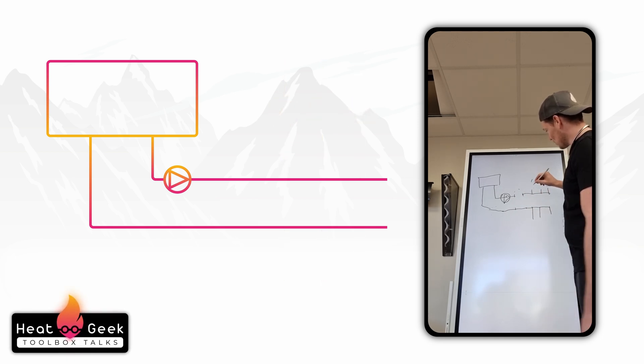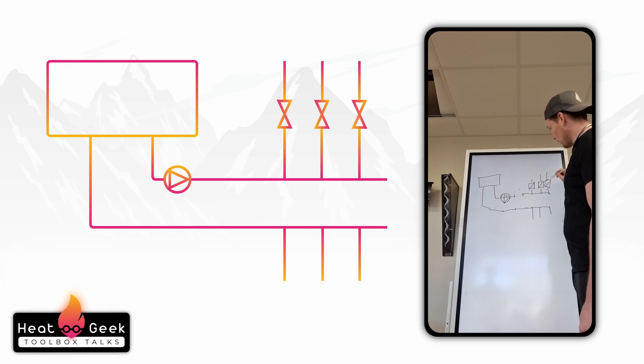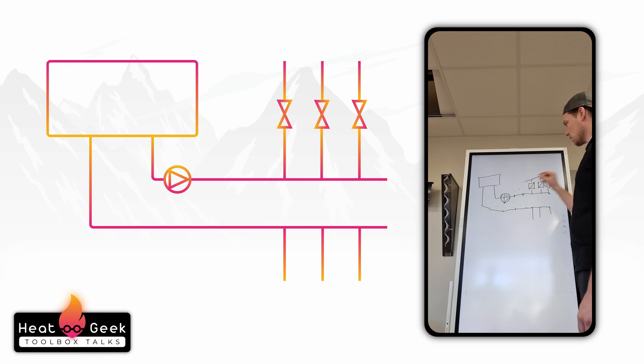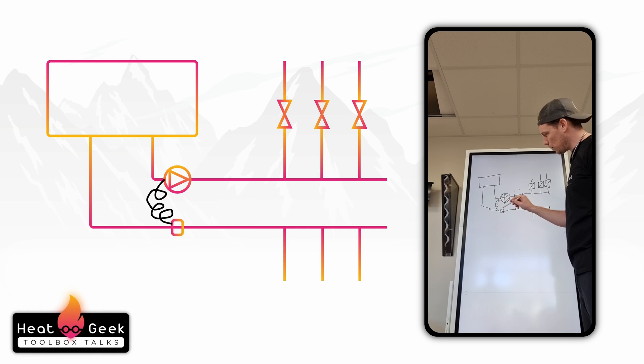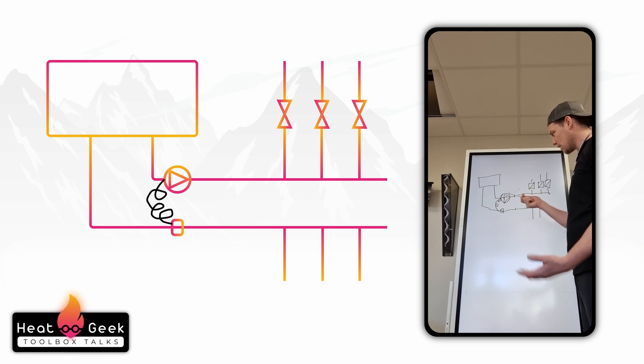And just put good old-fashioned zone valves in which don't look as sexy for social media. Then if you put that on proportional pressure, that will vary its flow rate accordingly to the zones being open. Or even better, get a DT pump and put a sensor on here and that will rectify for whatever DT you set depending on the load on the system.